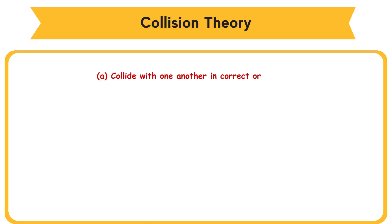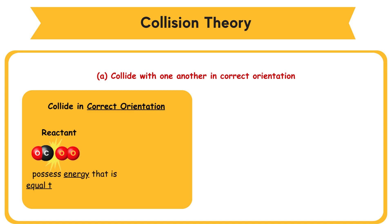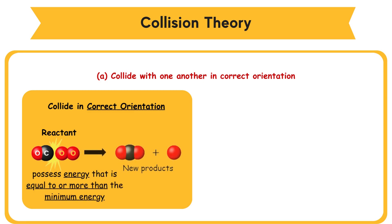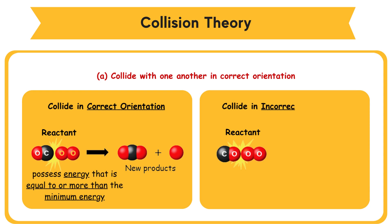a. Collide with one another in correct orientation. When reactant molecules collide in correct orientation and possess energy that is equal to or more than the minimum energy, it will result in a chemical reaction and produce new products. When reactant molecules collide in incorrect orientation, the molecules bounce back and no chemical reaction occurs.